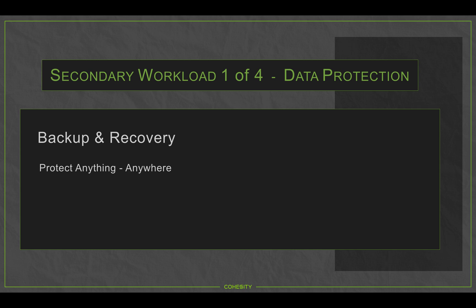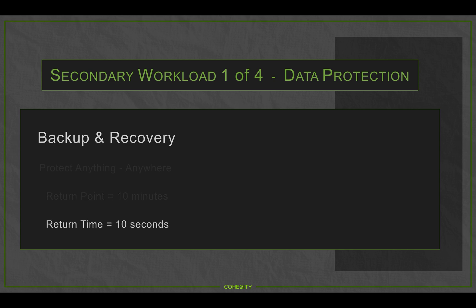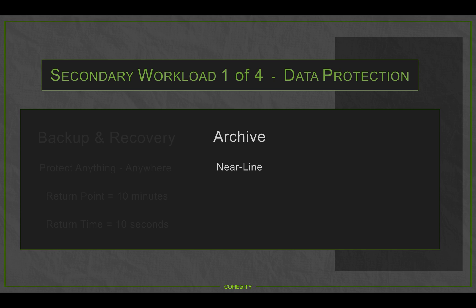Using our SnapTree technology — our patented technology — we can take very efficient backups, giving us the ability to back up as frequently as every 10 minutes, providing a recovery point of 10 minutes or less, and a near-instant recovery time of about 10 seconds. Another key aspect of data protection is archive. With Cohesity, we can keep a lot more data on platform, giving you that first near-line archive, while also seamlessly flowing data up to cloud for deep archive. Data placement is managed entirely from Cohesity — based on economics and value to the company.